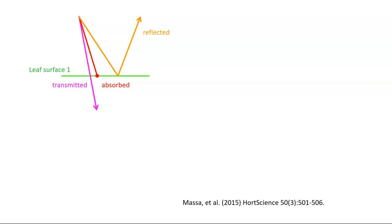There is an interesting publication in the journal Hort Science about how much light can be transmitted. They used several LEDs at unique wavelengths. The amount of light emitted by the LEDs was determined, and they then placed single leaves on top of the diodes to see how much light was transmitted. In general, within the working range of photosynthesis, only about 2–8% of the light was transmitted.